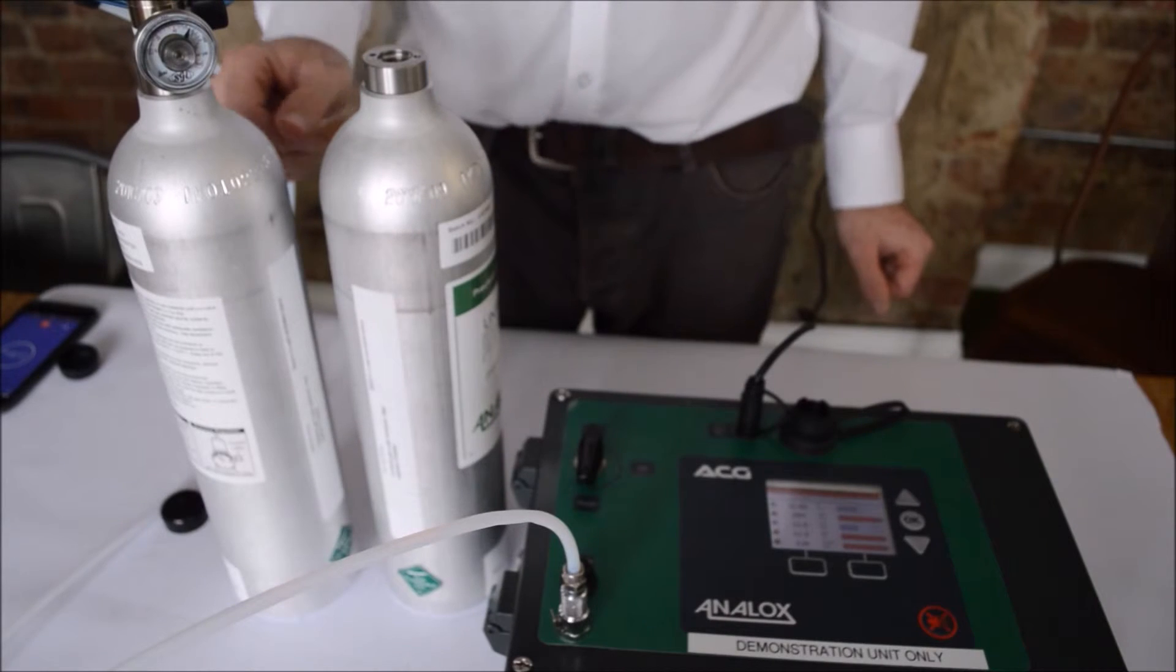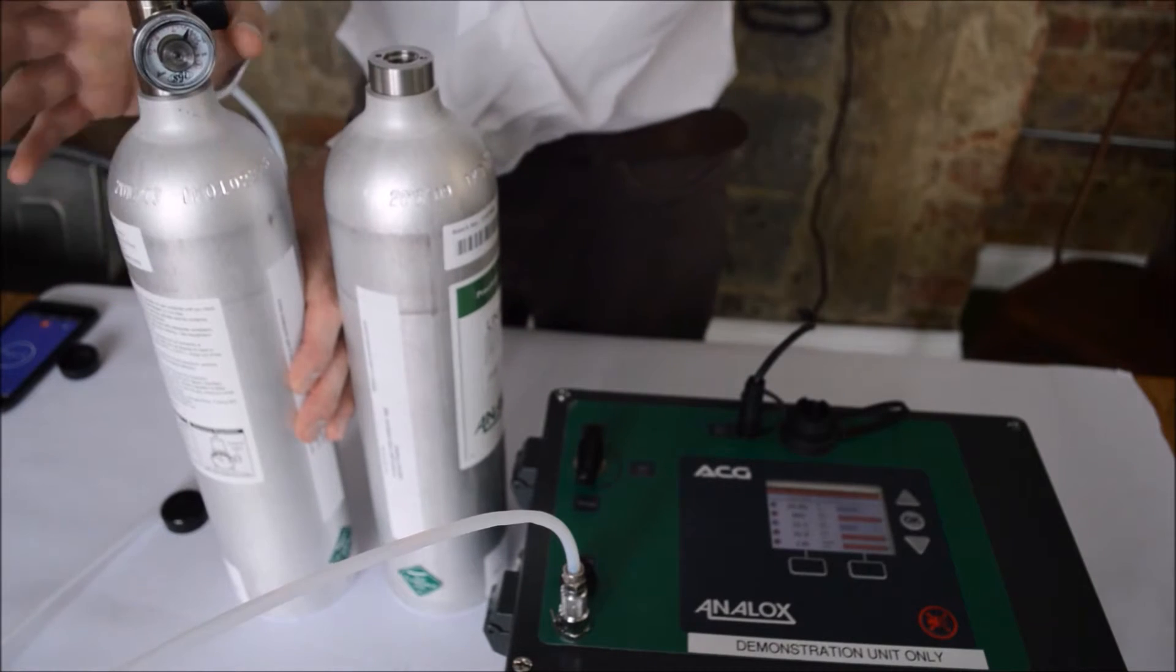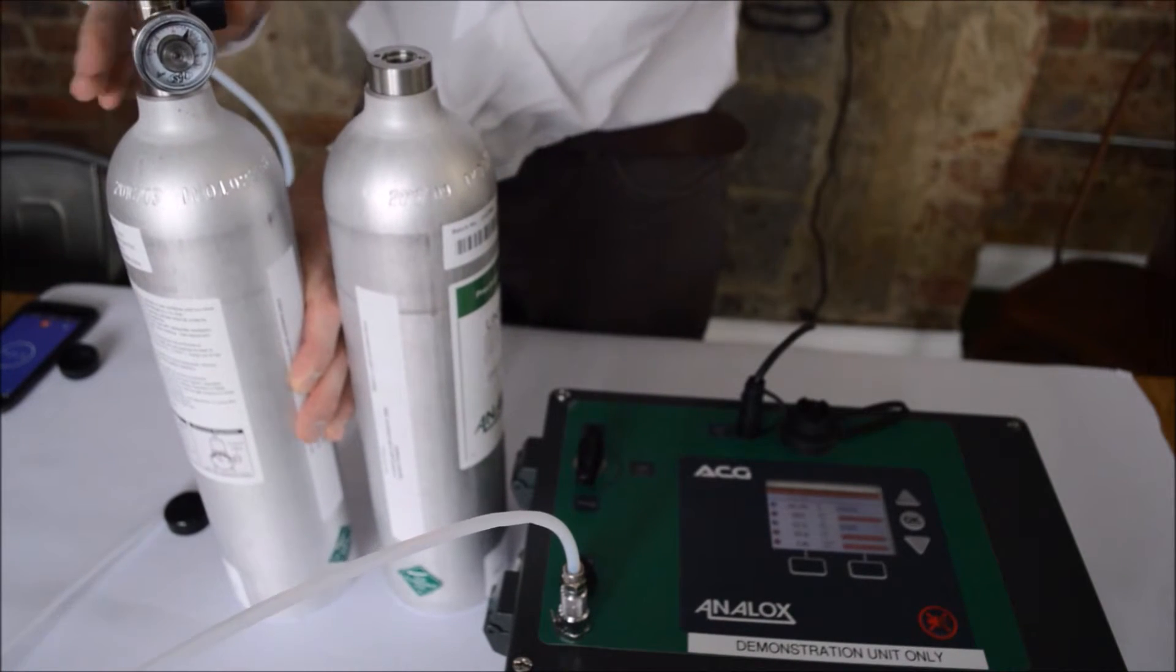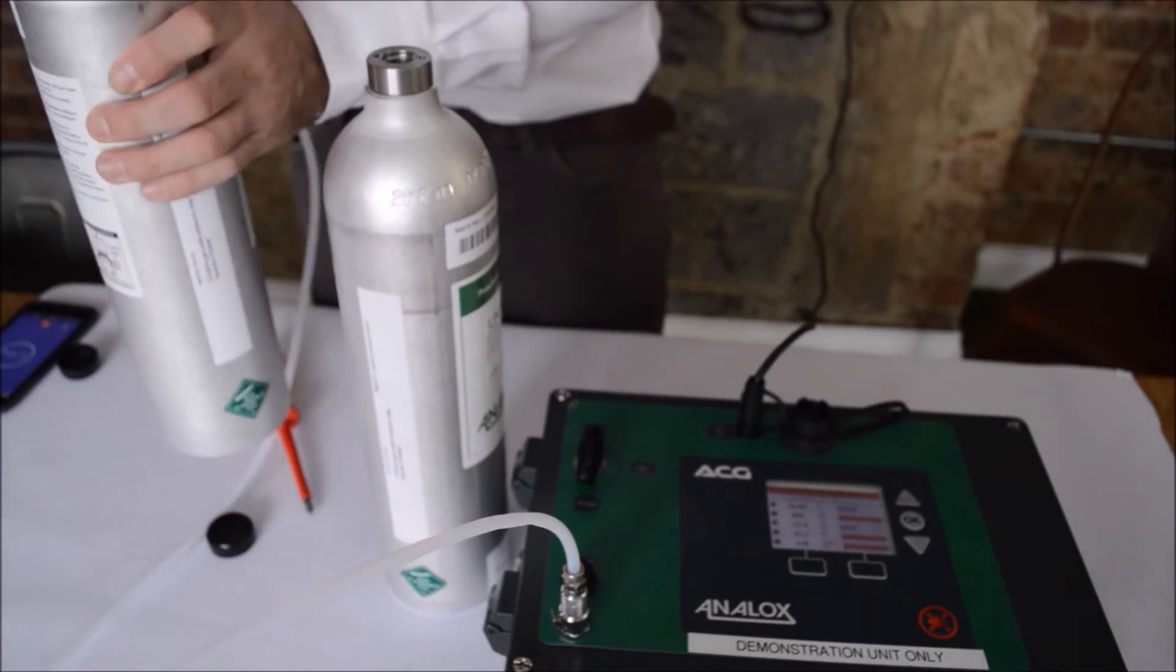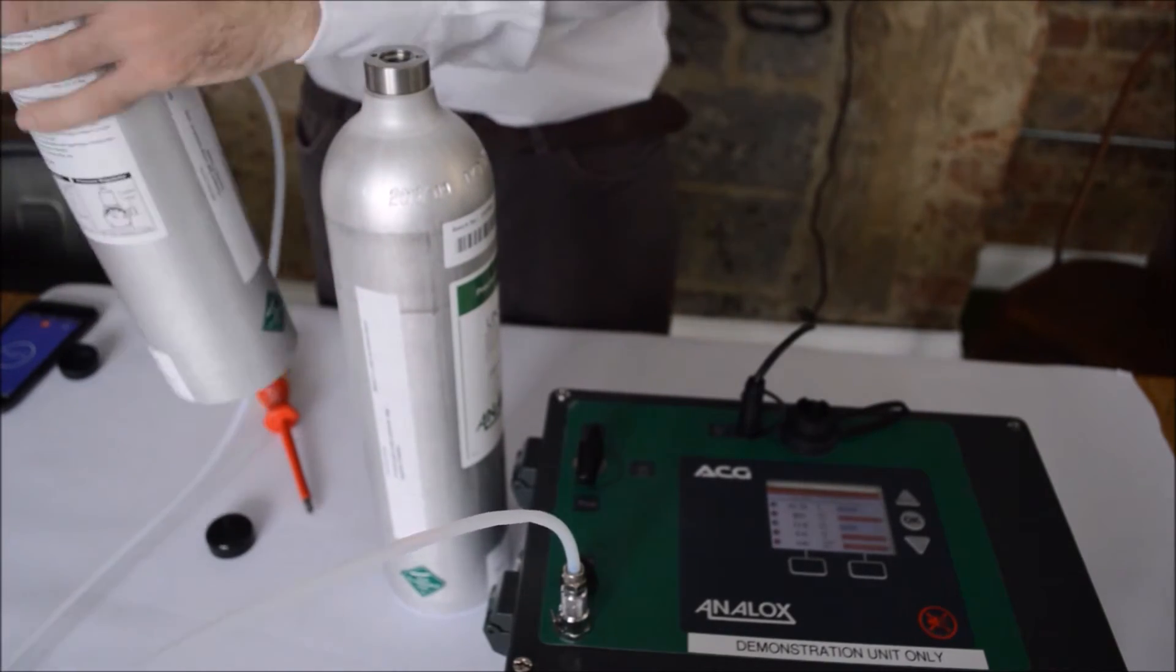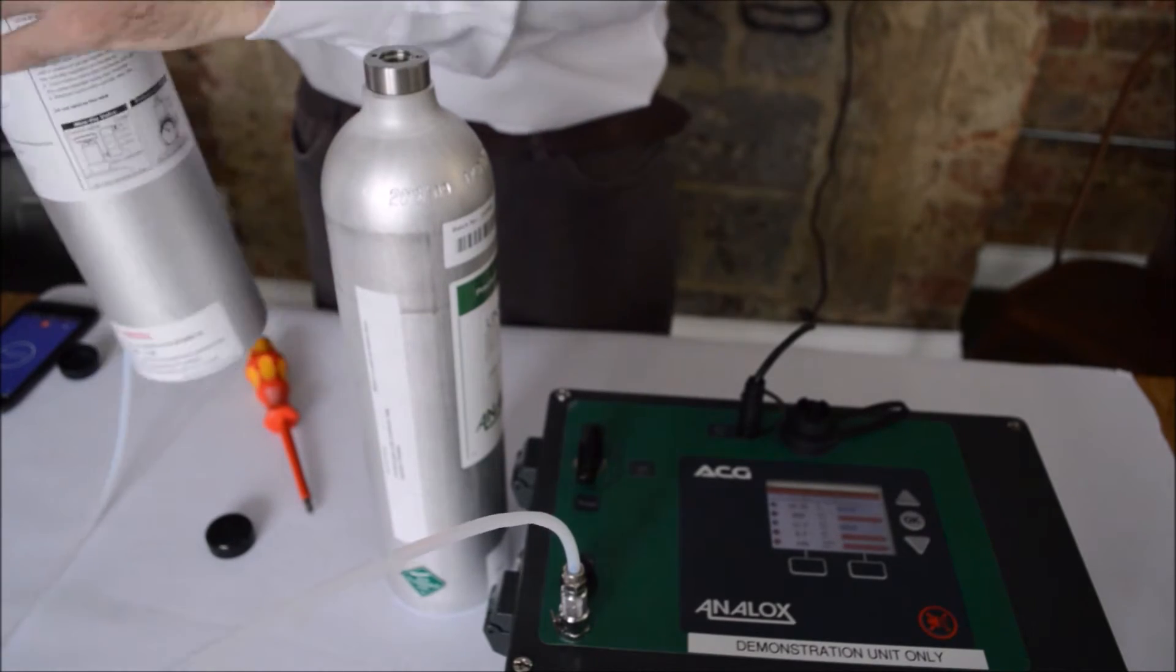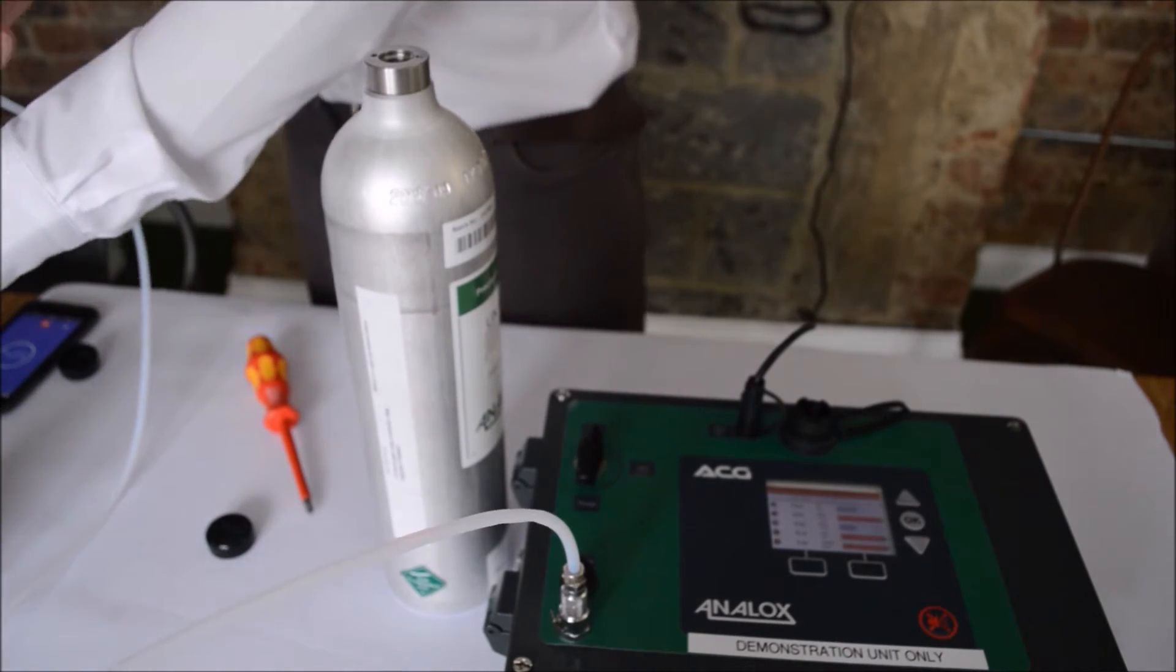We're currently connected up to a zero gas calibration, and what we need to do now is swap the calibration regulator from the zero gas to the span gas. So initially we turn the gas off, unscrew it anti-clockwise, and remove the zero gas.